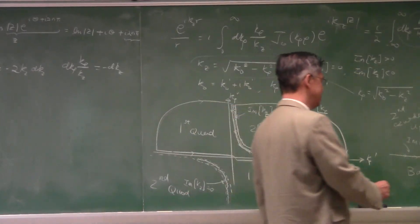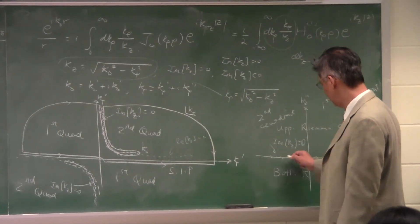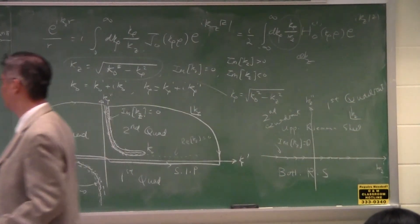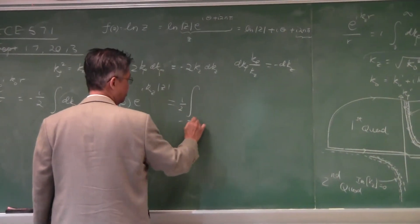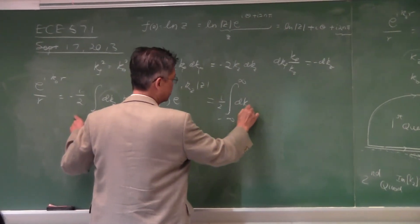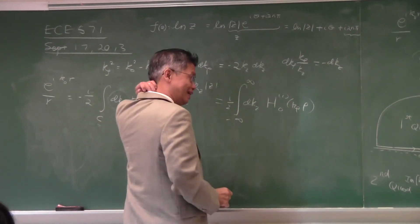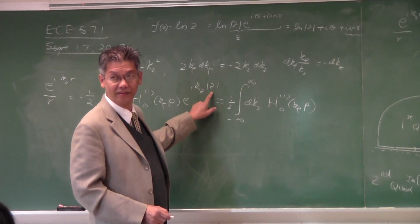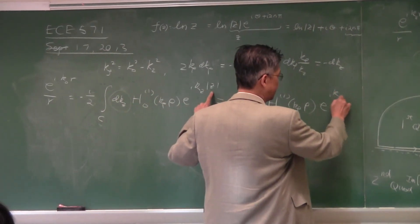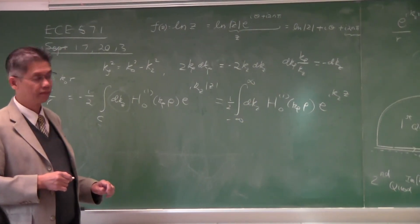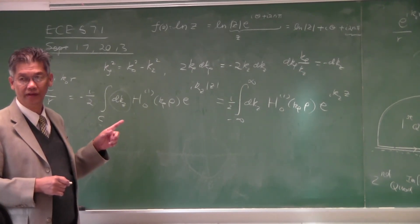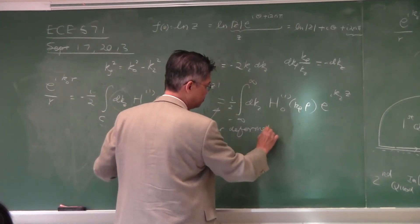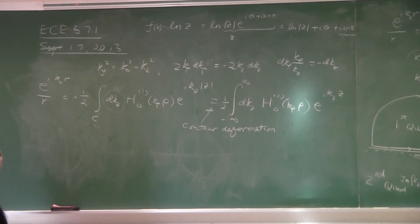Integration along the SIP is the same as integration along that path, which means integration in the negative direction because of the inverse mapping. So by contour deformation, you can show that this equals that. The contour deformation works differently when z > 0 compared to when z < 0, and for those two cases the magnitude sign goes away. This is a very important identity.